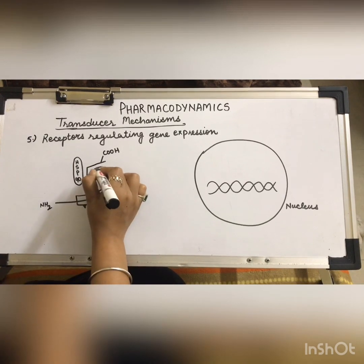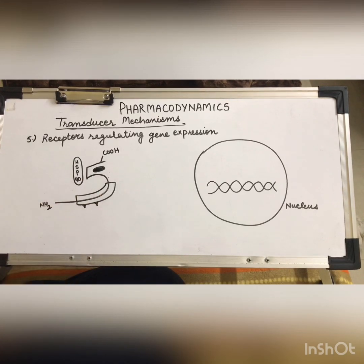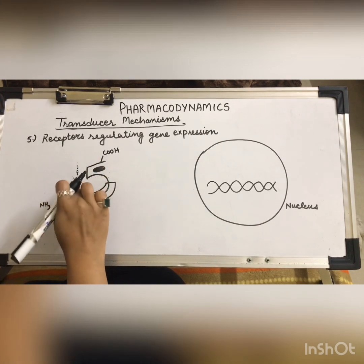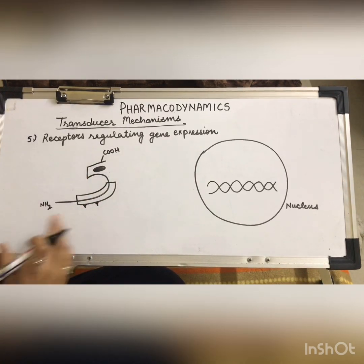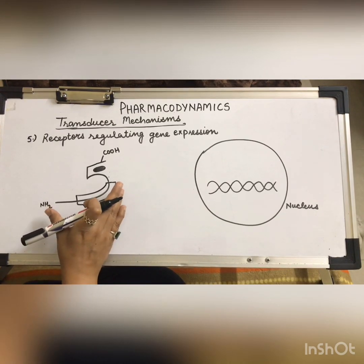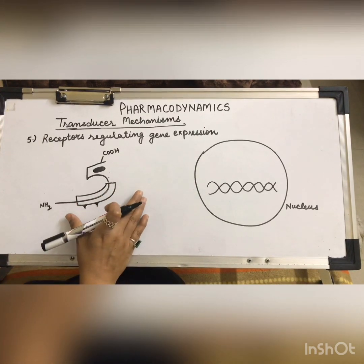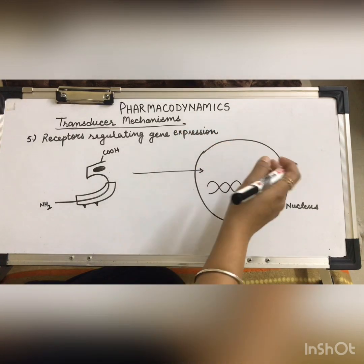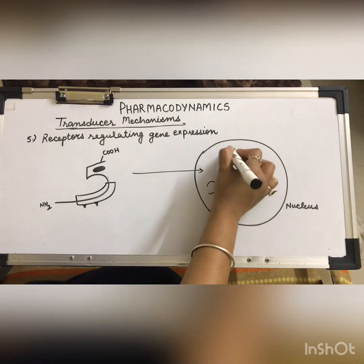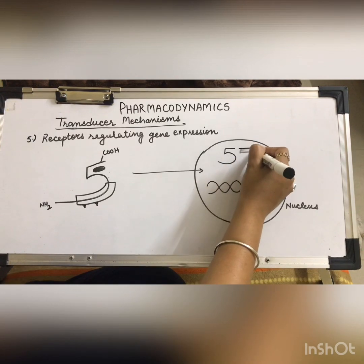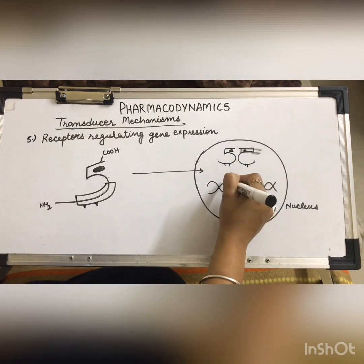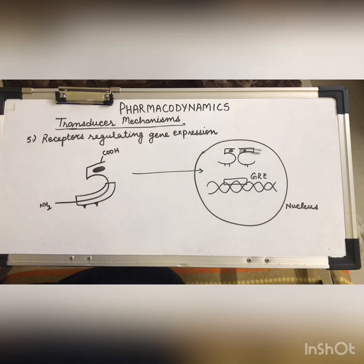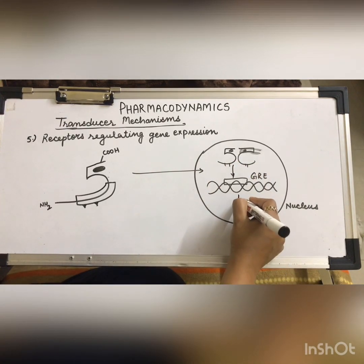Glucocorticoids bind to cytoplasmic or nuclear receptors — the proteins that are complexed with heat shock proteins. After glucocorticoid binding, the heat shock proteins dissociate. The receptors can then form a dimer. They either enter the nucleus or, if already in the nucleus, bind to DNA at specific regions known as GRE — glucocorticoid responsive elements.